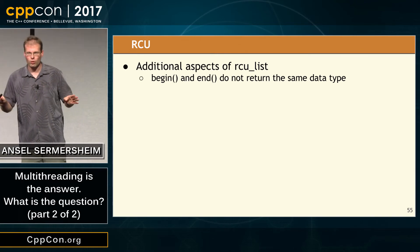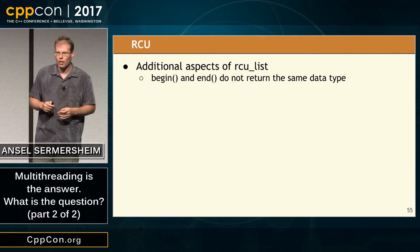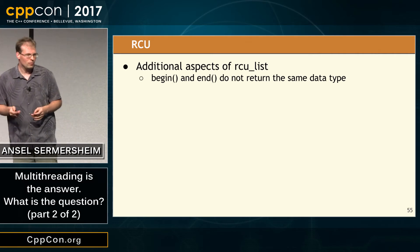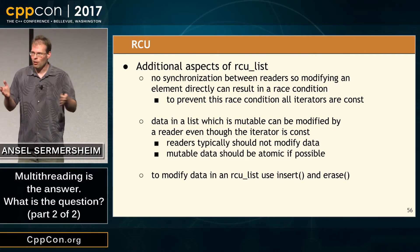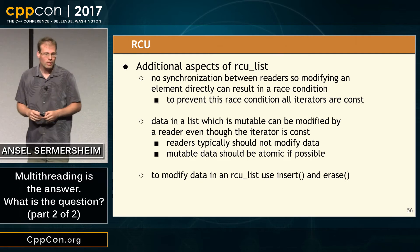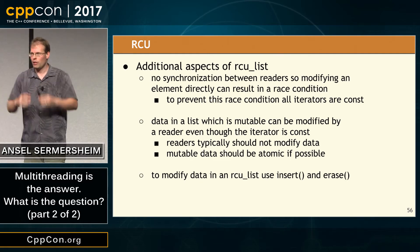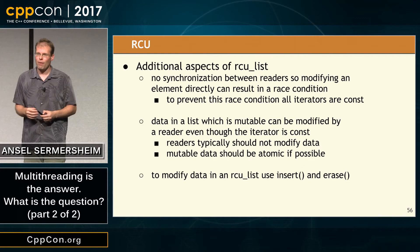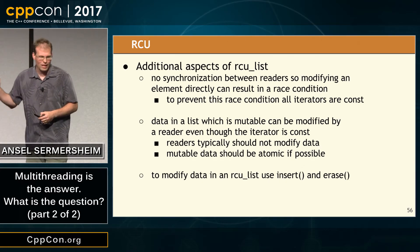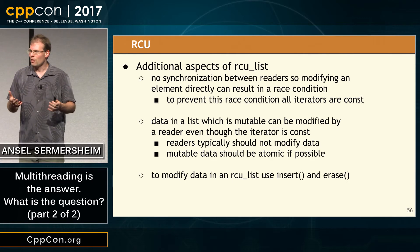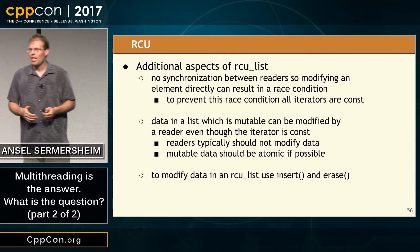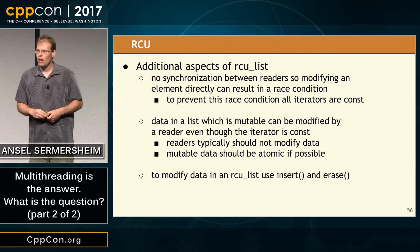There's no synchronization between readers, so modifying an element's data could result in a race condition. Therefore all iterators are const — this prevents race conditions unless you have mutable data in your elements, which is a bad idea. To modify data in an RCU list, use insert and erase. Don't modify elements directly. If you think: this iterator is const, let me just make my data mutable to get around it — you will shoot yourself in the foot.